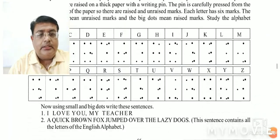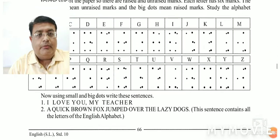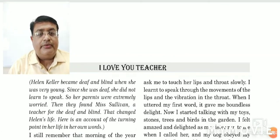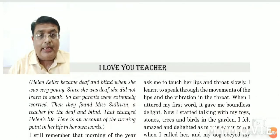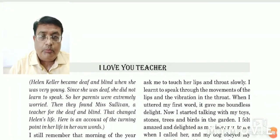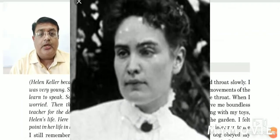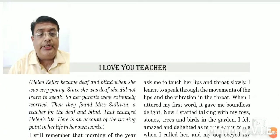Now I will start our lesson. Helen Keller became deaf and blind when she was very young. Since she was deaf, she did not learn to speak. So her parents were extremely worried. Then they found Miss Sullivan, a teacher for the deaf and blind, who challenged Helen's life. Here is an account of the turning point in her life in her own words.